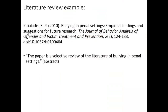Another type of secondary source is the literature review, which is usually a journal article that summarizes the research done by others in a particular area. Literature reviews can not only help you get an overview of the research that's been done, but they also provide a list of the original studies or primary sources.